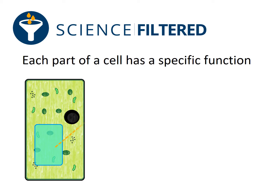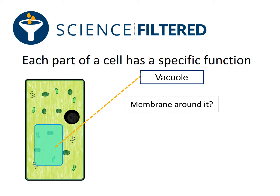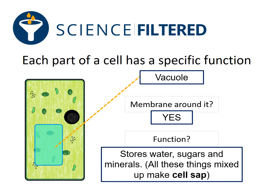The part of the cell that is shown here is called the vacuole. The vacuole also has a membrane around it, and its function is that it stores water, sugars, and minerals. There's a specific word we use to describe this — water, sugars, and minerals all mixed together make up what's known as cell sap, and that is stored in the vacuole.